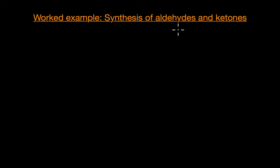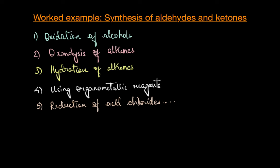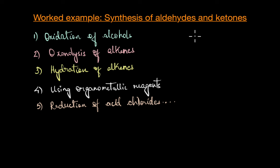We are already familiar with the various ways in which aldehydes and ketones can be prepared — from simple oxidation of alcohols, ozonolysis of alkenes, hydration of alkenes, using organometallic reagents, reduction of acid chlorides, and esters are a few of the methods by which aldehydes and ketones can be synthesized.